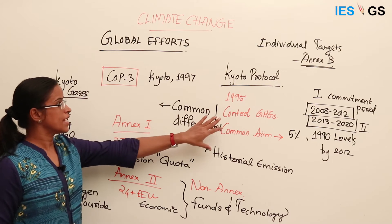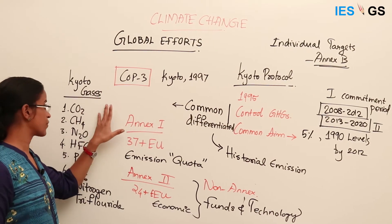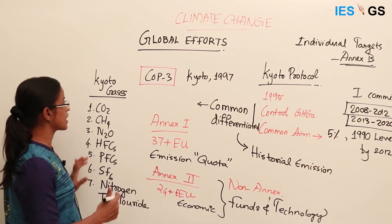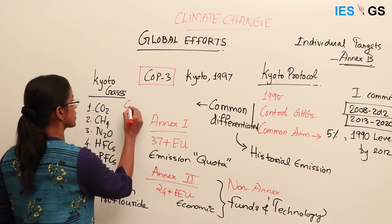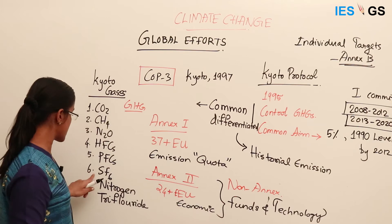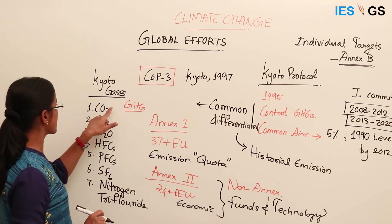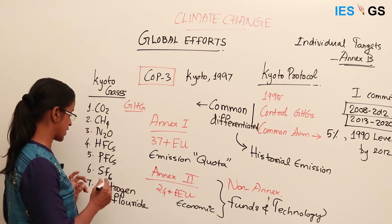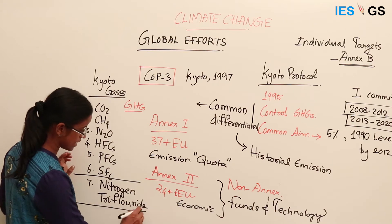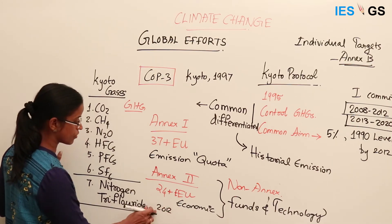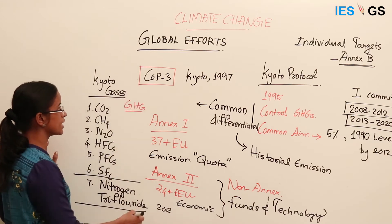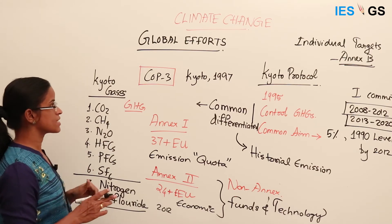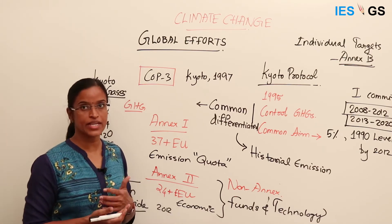The Kyoto Protocol mentions certain gases as Kyoto gases where emissions must be controlled. Initially there were 6 greenhouse gases: carbon dioxide, methane, nitrous oxide, hydrofluorocarbons, perfluorocarbons, and sulfur hexafluoride. Later one more gas was added in 2012 at the COP that year, bringing the total to 7. These are commonly called Kyoto gases, and the protocol aims to achieve emission reduction for all of them.